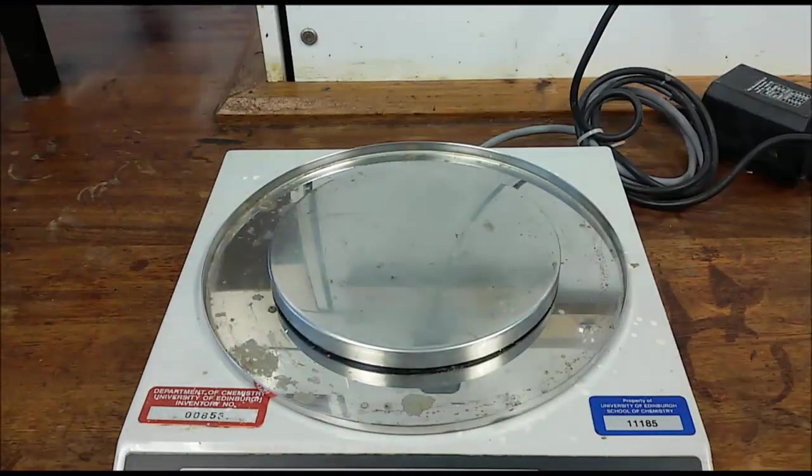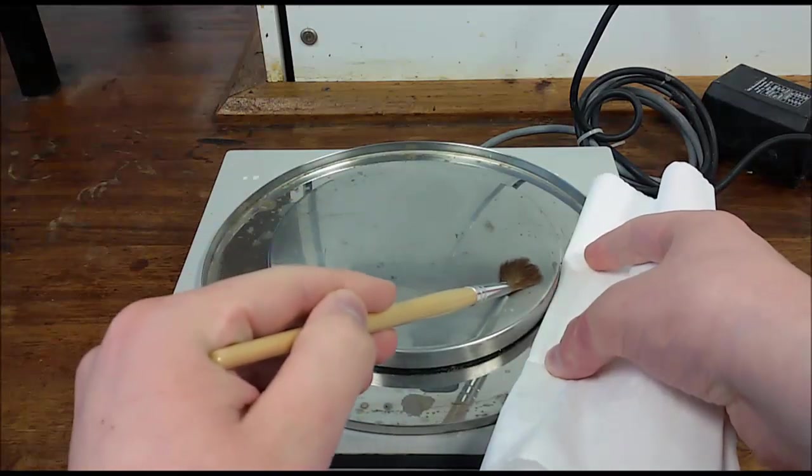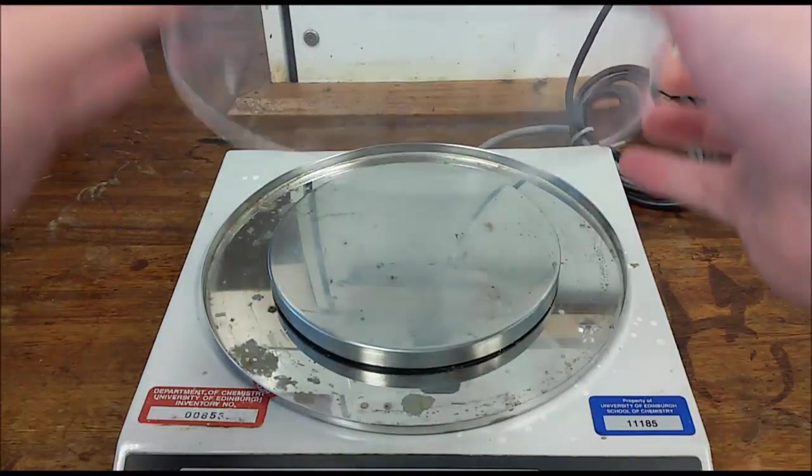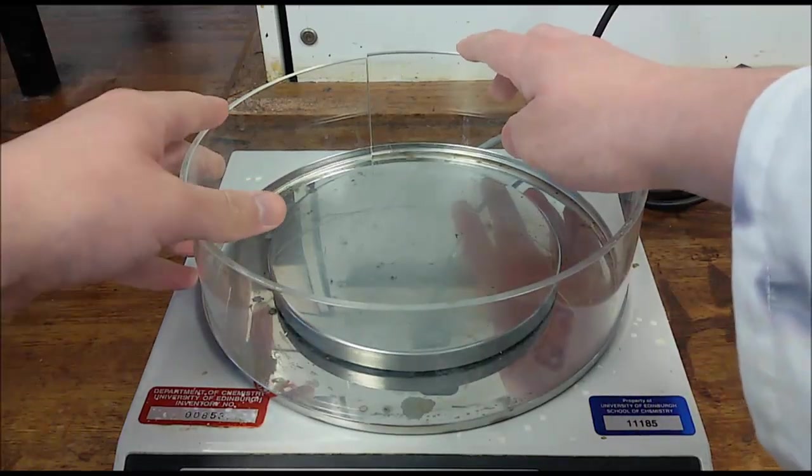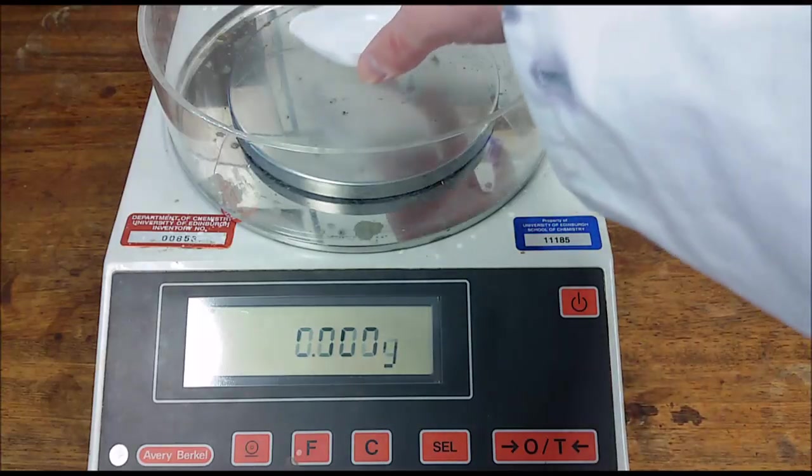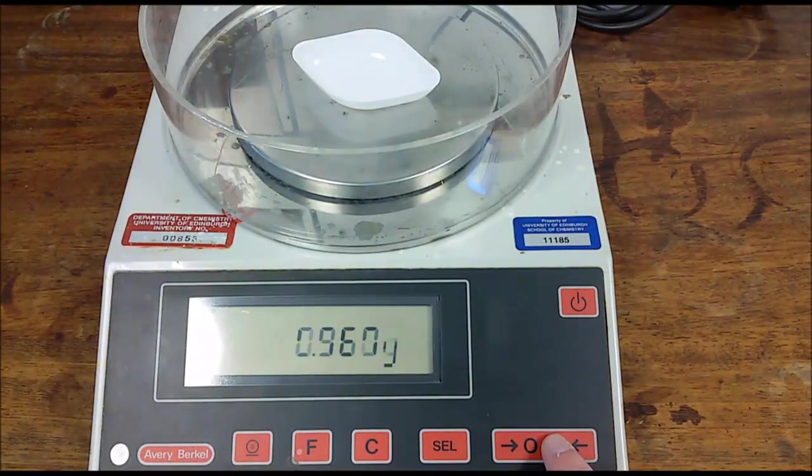Before you proceed, check if the balance is clean. If not, clean it using a brush to sweep any solid onto a piece of paper. Place the boat on the balance and press the tare button to adjust to zero.